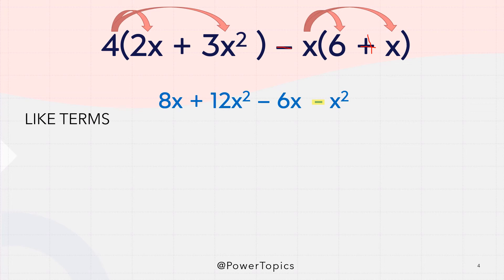So to simplify it, we have to collect our like terms or what I like to call friends. Now 8x and 6x are like terms. You can see the similarities between them. And 12x square and x square are like terms. They are friends.